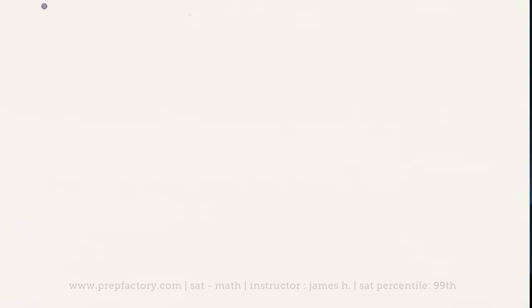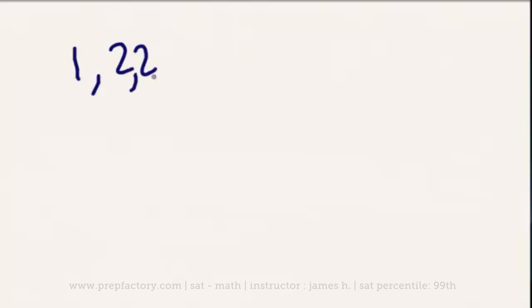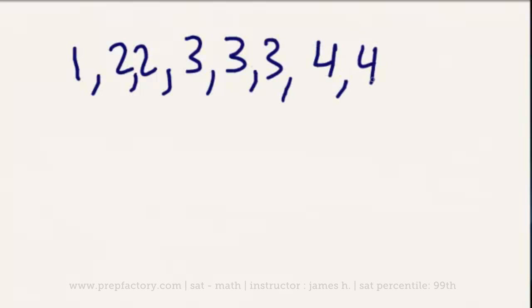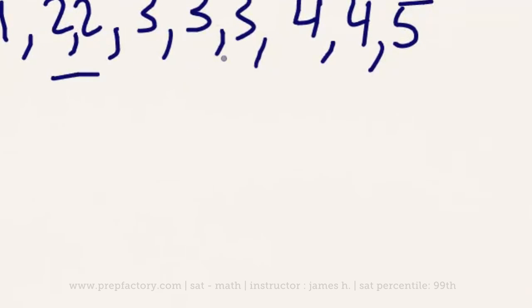The mode is the number that appears most commonly in a set. Many sets will not have modes — for example, the sets we just discussed had no modes because no number appeared more than once. But if we have a set like 1, 2, 2, 3, 3, 3, 4, and 5 — we have two 2s, three 3s, and two 4s — because the three 3s are most common, 3 is the mode.